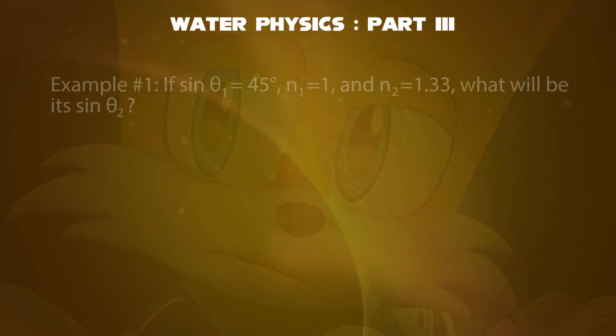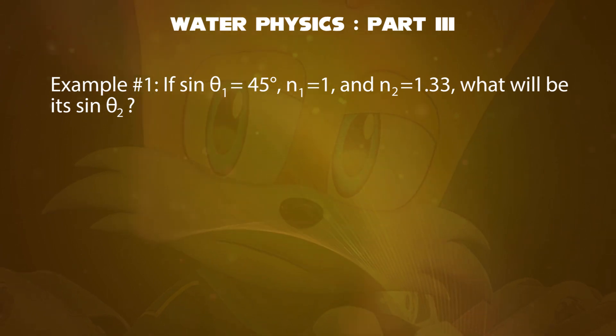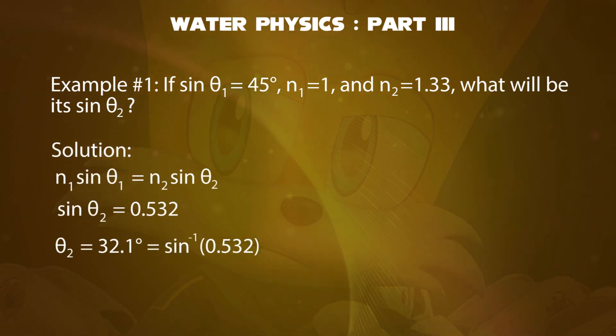For example, if sine theta1 is equal to 45 degrees, then what will be its second angle? You'll obtain the inverse sine value. When you solve, we get theta2 equal to 32.1 degrees, and is also equal to inverse sine of 0.532, which is the refracted angle.